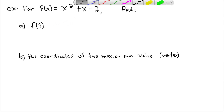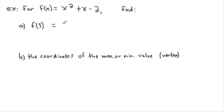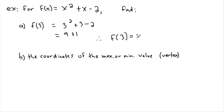So for f of three, that just means what's the function value when I put in x equals three. Wherever I see an x, I replace it with three. So it's going to be three squared plus three minus two. Three squared is not six — it's three times three which is nine — plus three minus two, which is one. So f of three equals ten.